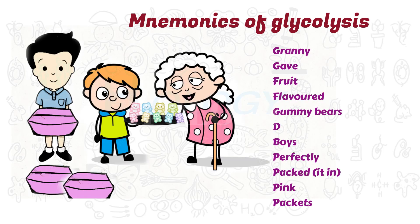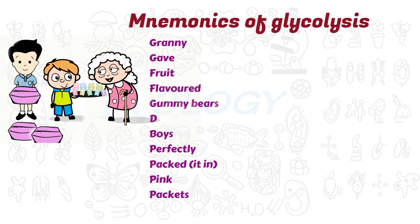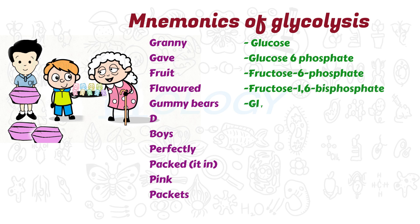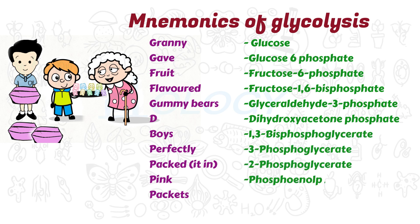Here's a mnemonic to remember the glycolysis pathway: 'Granny gave fruit-flavored gummy bears, D-boys perfectly packed it in pink packets.' G for glucose, G for glucose-6-phosphate, F for fructose-6-phosphate, F for fructose-1,6-bisphosphate, G for glyceraldehyde-3-phosphate, D for dihydroxyacetone phosphate, B for 1,3-bisphosphoglycerate, P for 3-phosphoglycerate, P for 2-phosphoglycerate, and G for phosphoenolpyruvate. Lastly, P stands for the final product of glycolysis, which is pyruvate.